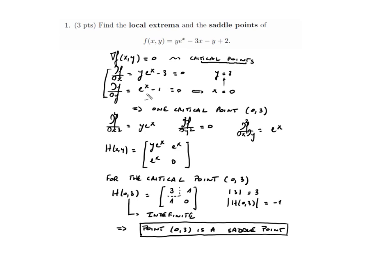The second equation involves only x, so you can solve for x, and if you inject that into the first equation you obtain y. We have one critical point which is (0, 3). To see if it is an extremum — a minimum, maximum, or saddle point — we have to look at the Hessian.